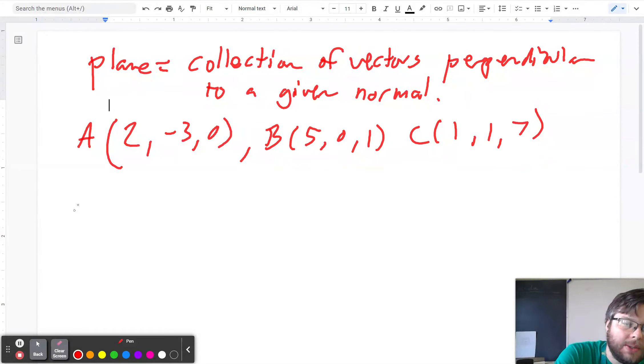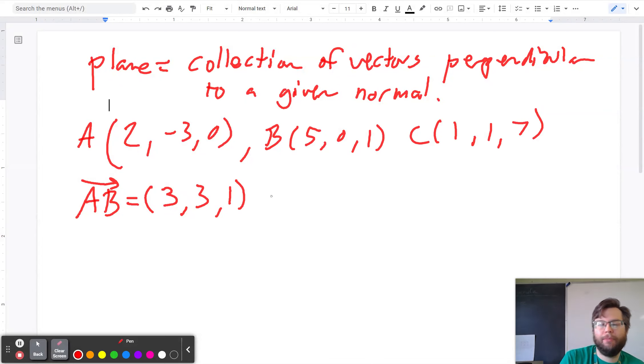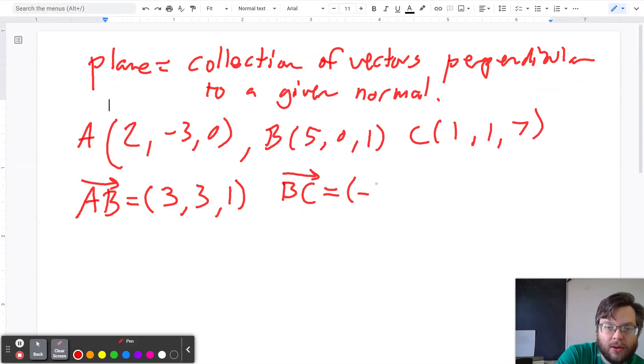So what I'm going to do is I'm going to calculate vector AB. Vector AB goes up 3, up 3, up 1. Then I could calculate either vector BC or vector AC, it doesn't matter. I'm going to calculate vector BC. BC goes down 4, up 1, up 6.